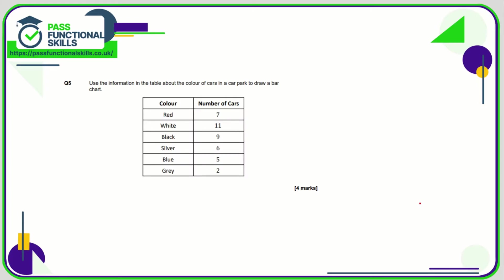Question number five. We want to do a bar chart with this information. We want number of cars on the vertical axis and colors across the bottom: red, white, black, silver, blue, gray. Obviously I'd write it in full, otherwise the two B's would be confusing.